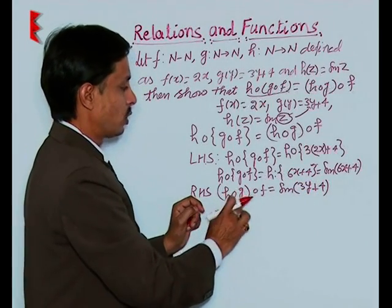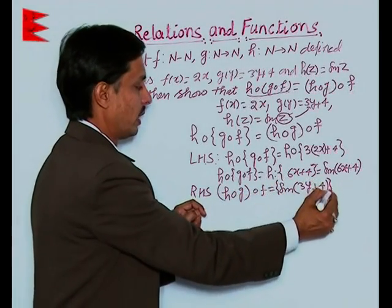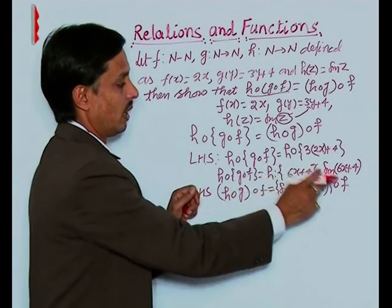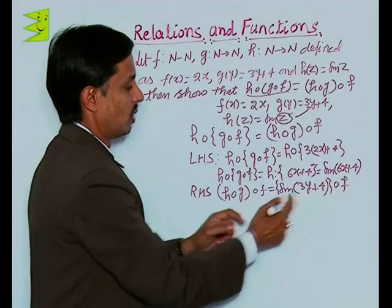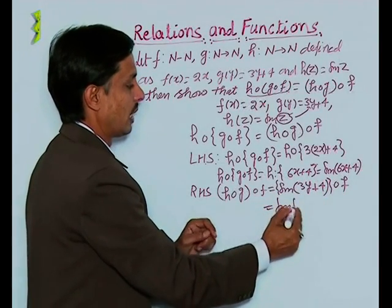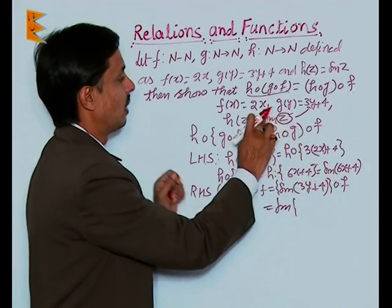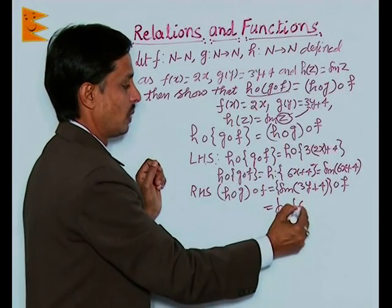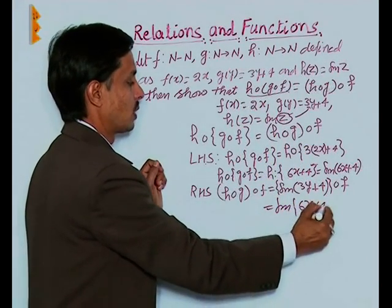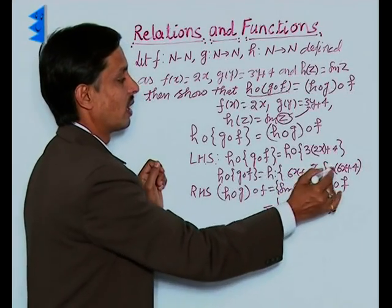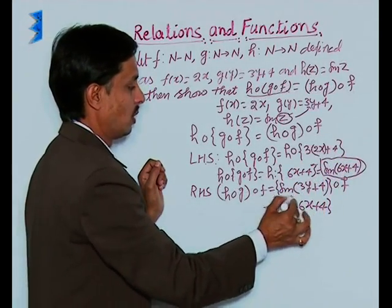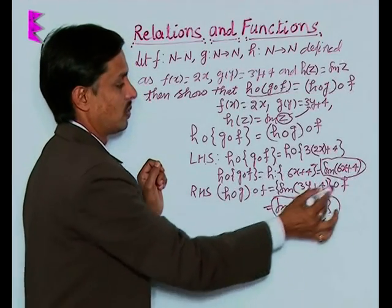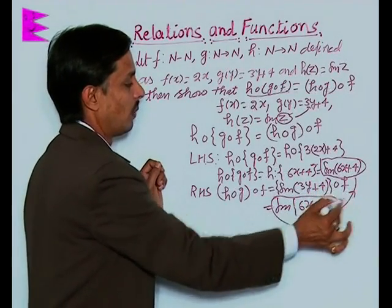This is h∘g and what is required of f means here in place of y, f needs to be put. This will be sin of 3 times 2x, which becomes 6x plus 4. We can conclude the LHS is sin of 6x plus 4, RHS is also sin of 6x plus 4. Both values are equal.